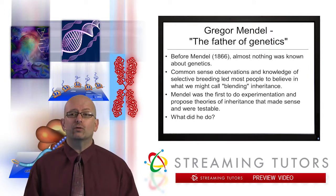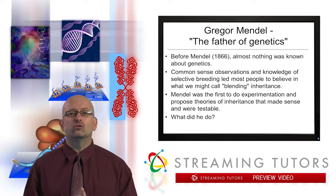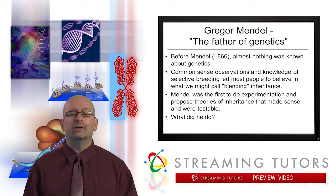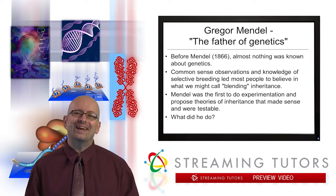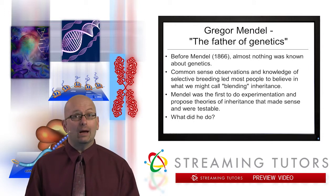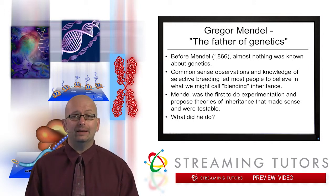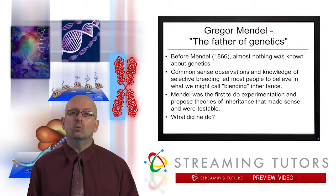Mendel was the first to do very strict experimentation based on sound principles, keeping very good records. He proposed theories of inheritance that actually made sense and, very importantly, were testable. We can almost do the exact same type of crosses that he did today. So it's logical to ask: what exactly did he do?